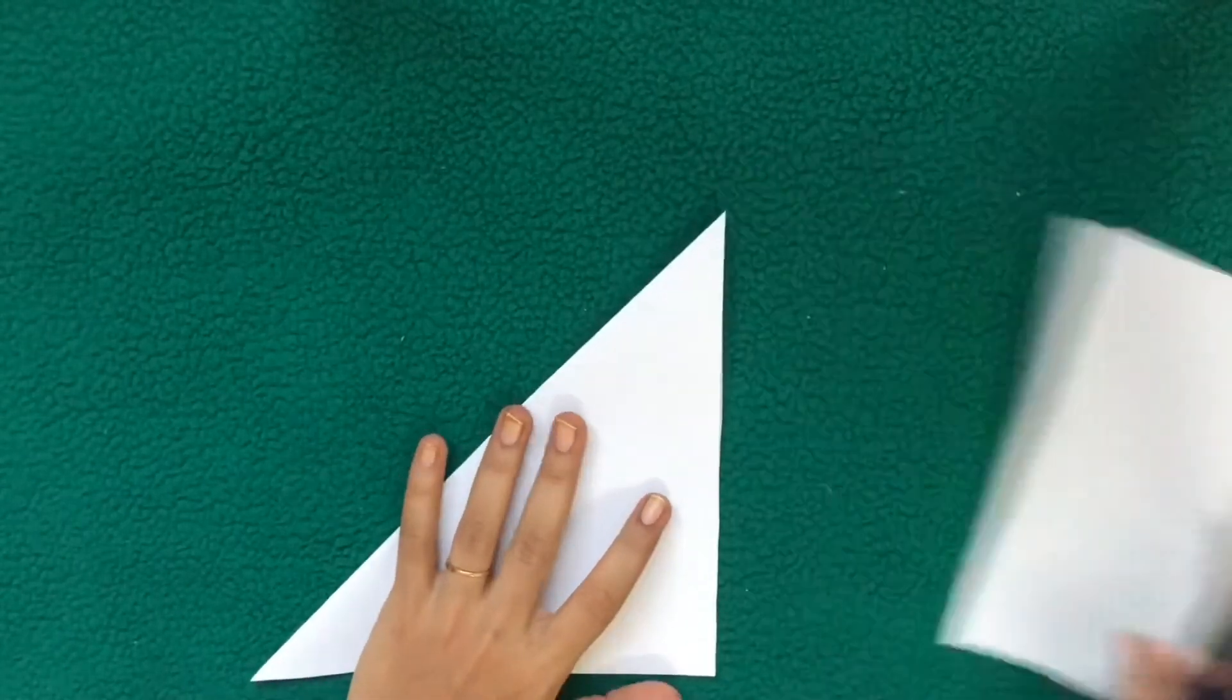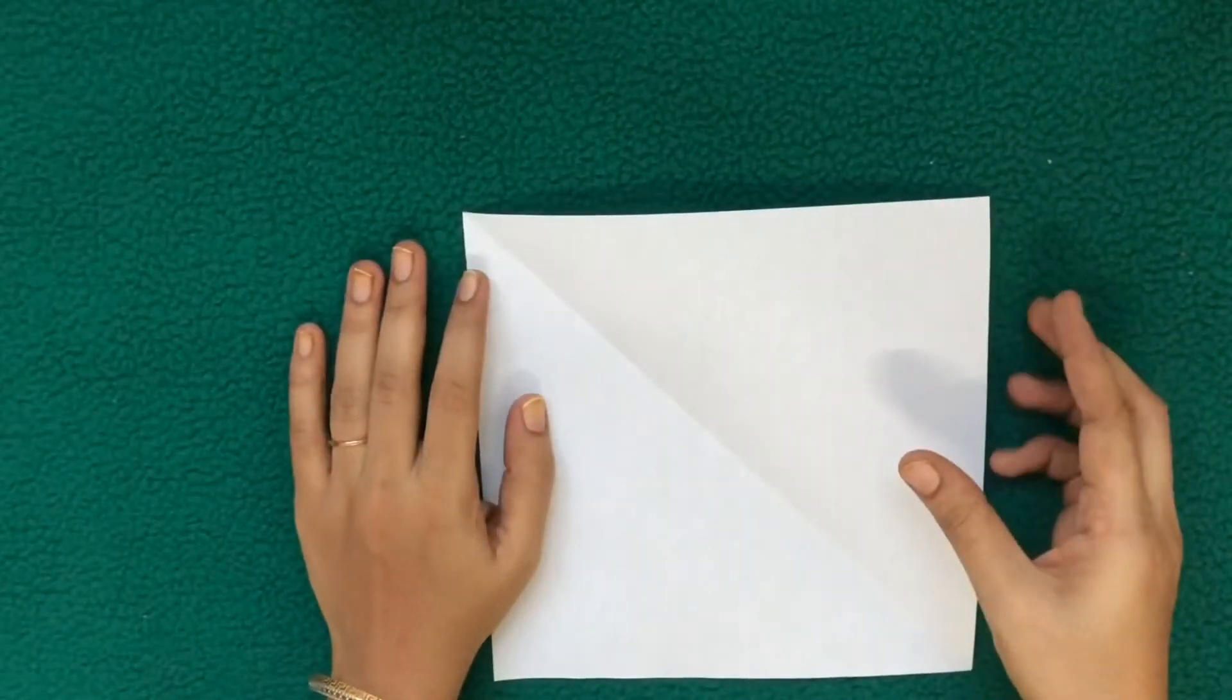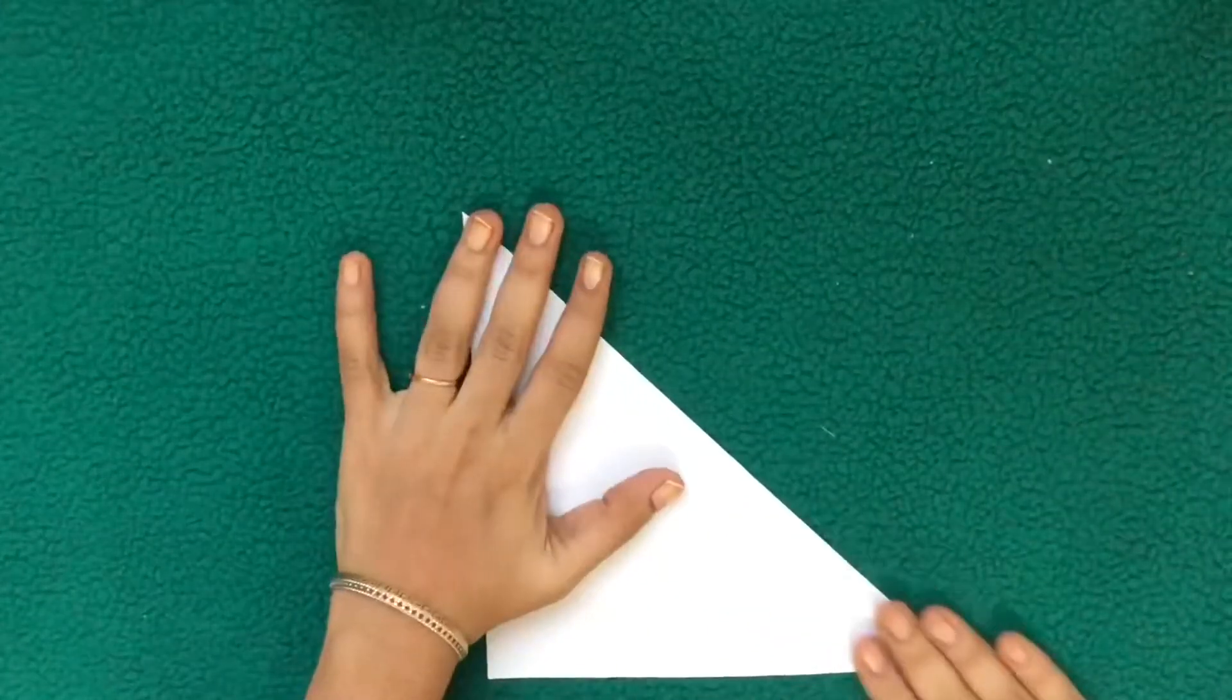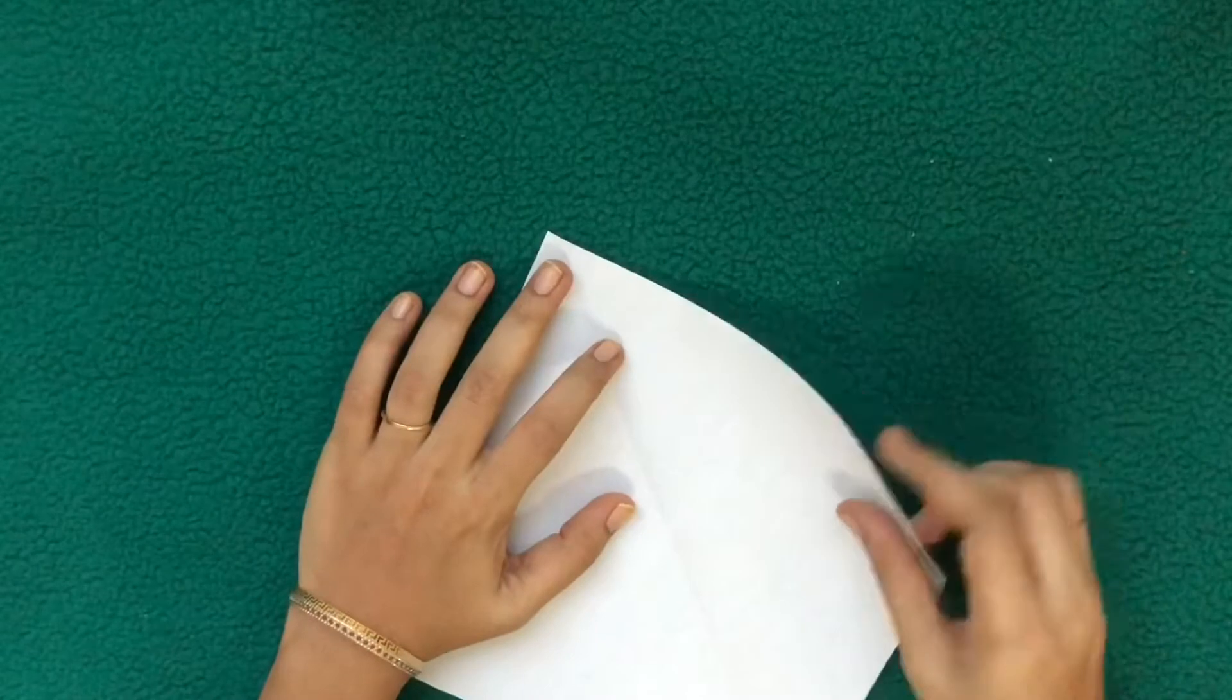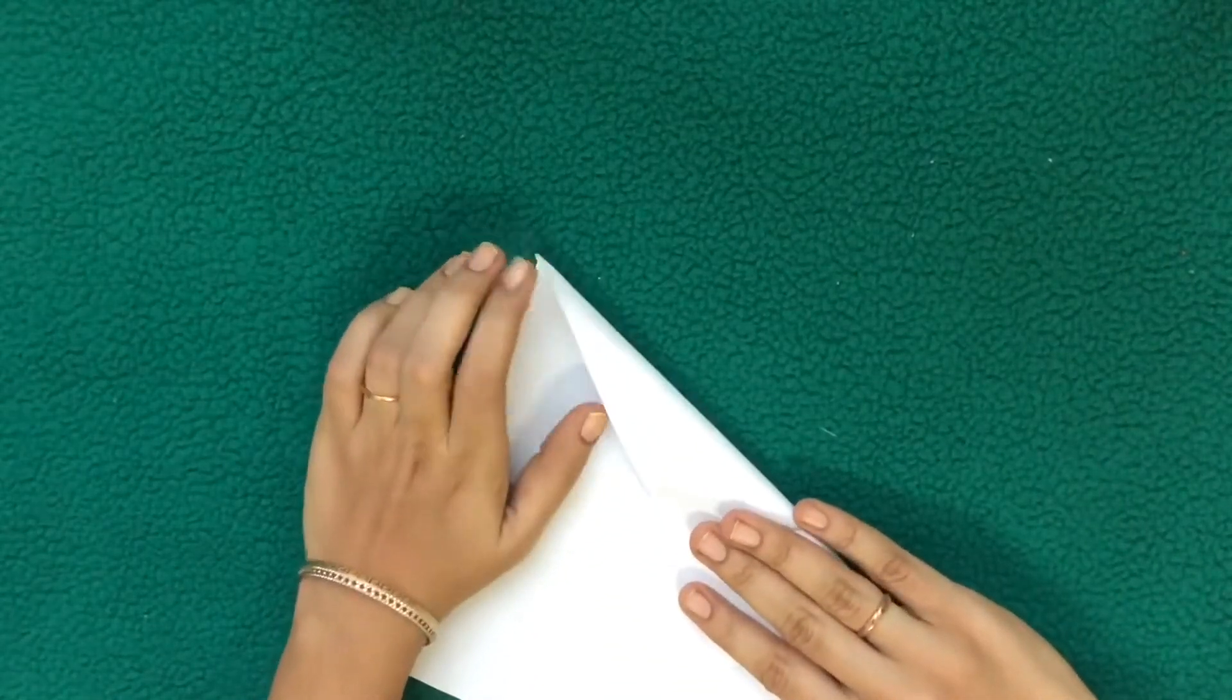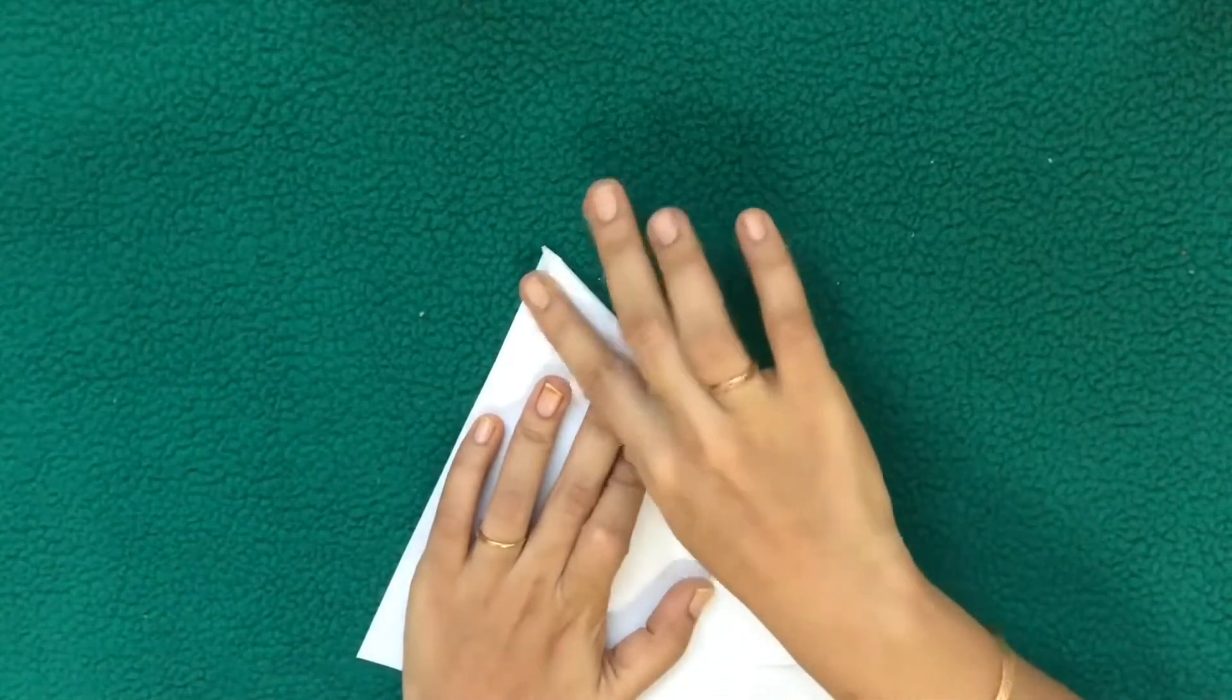And unfold it. Now the paper is in square. Next we will make valley fold or mountain fold. Take a square paper, fold into triangle and unfold it. Now fold like this so that the end touches the center.